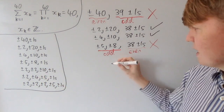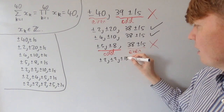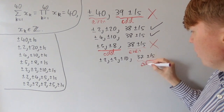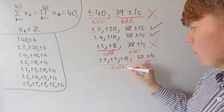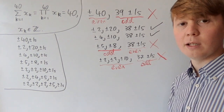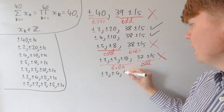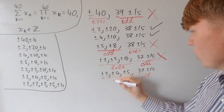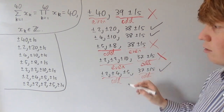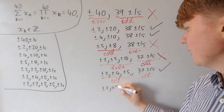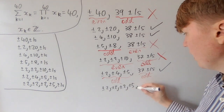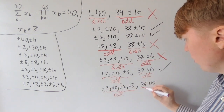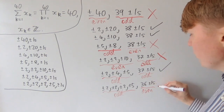For ±2, ±2, ±10 with 37 ±1s: the contribution from the 2s and 10 is even, but 37 ±1s give an odd contribution — even plus odd never equals 40, so we rule this out. For ±2, ±4, ±5 with 37 ±1s: both contributions are odd, so we can't rule this one out — give it a tick, though that doesn't confirm it works. Finally, for three ±2s and ±5 with 36 ±1s: the 2s and 5 give an odd contribution while 36 ±1s give an even contribution, so we rule this out too.